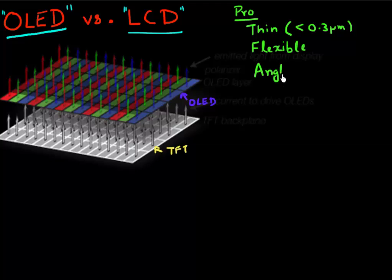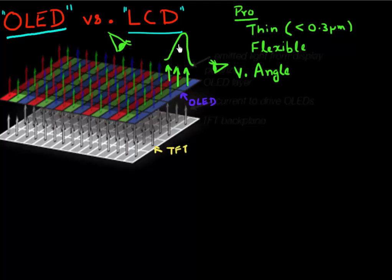Another advantage is that since OLED-based displays have their light source at the very top, and the light does not have to pass through many layers, you can have a much larger viewing angle. You can look at these displays from wide angles and they will still provide large contrast, as compared to LCD-based displays where contrast falls very rapidly as a function of viewing angle. So that's three things in favor of OLED-based displays.